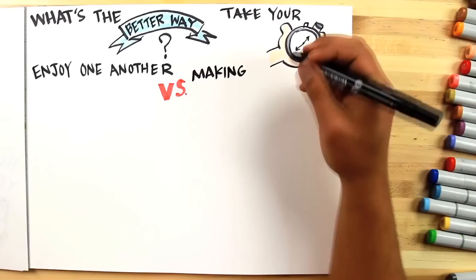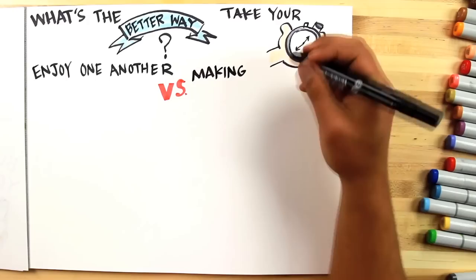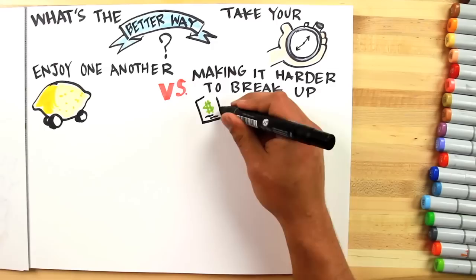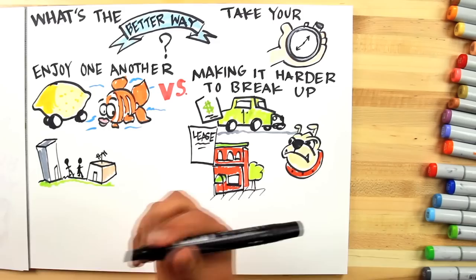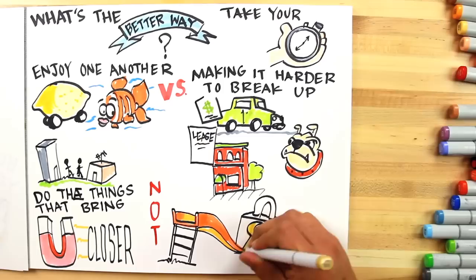What is the better way? Take your time to enjoy one another without doing the things that make it harder to break up. Go ahead and fix up the current lemon; don't sign for a new car. Buy Princess the fish, not Princess the puppy. Keep your own place; don't sign a lease together. Decide to do the things that bring you closer; don't slide into the things that lock you in.